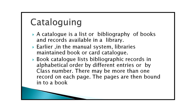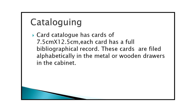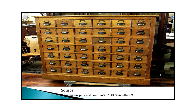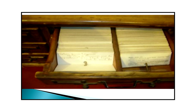A catalog is a list or bibliography of books and records available in a library. In the manual system, libraries maintained book or card catalogs. A book catalog lists bibliographic records in alphabetical order by different entries or by class number, with more than one record per page, bound into a book. A card catalog has cards of 7.5 cm x 12.5 cm, each with a full bibliographical record, filed alphabetically in metal or wooden drawers in a cabinet. Some libraries still use these wooden card cabinets.